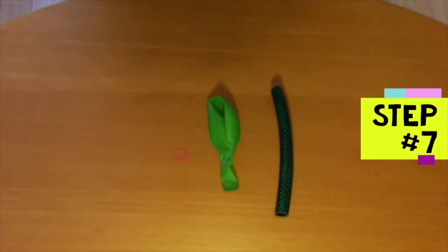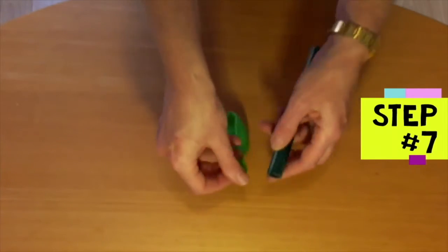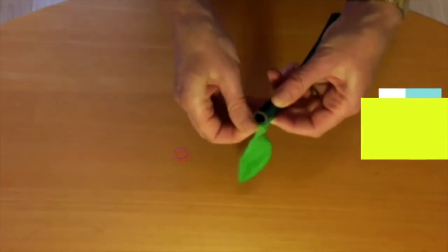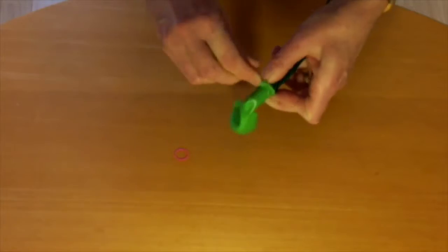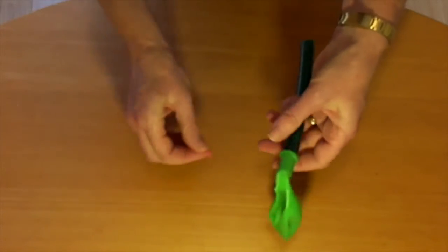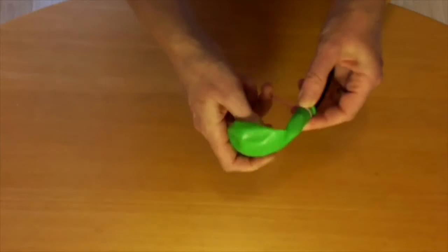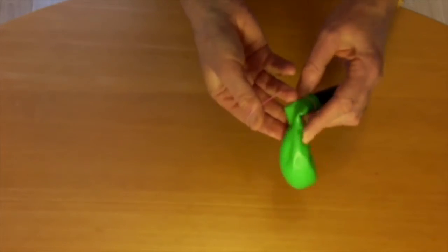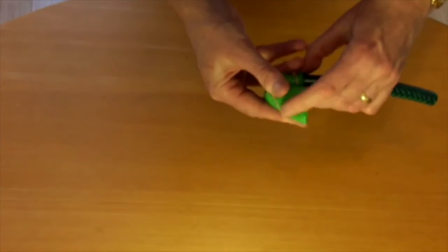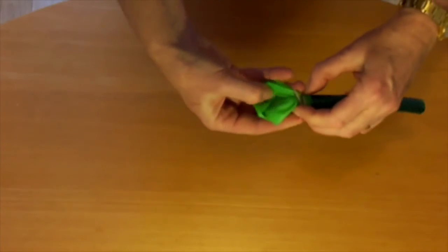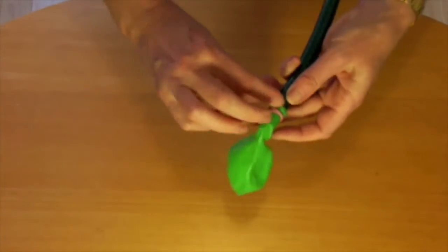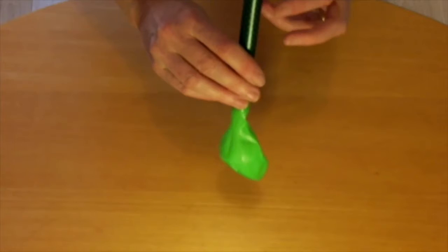Step 7 is to attach the balloon. So you slide the balloon over the end of the plastic tube. Then you hold it on with the rubber band so it doesn't fly off when you blow up the balloon. You might need to twist the rubber band a few times so it holds it on firmly. Then you try blowing up the balloon to make sure it doesn't fly off.